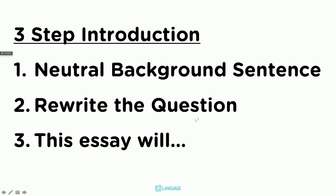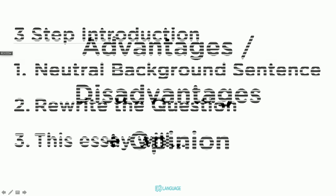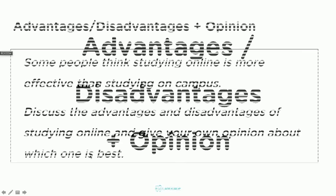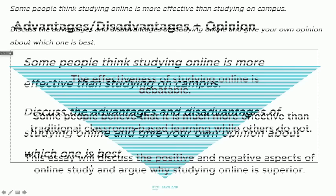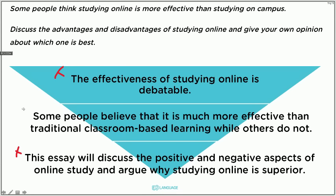Three-step introduction — neutral background sentence, rewrite the question, 'this essay will.' Let's do advantages and disadvantages plus opinion — this is the final one. 'Some people think studying online is more effective than studying on campus. Discuss the advantages and disadvantages of studying online and give your opinion about which one is best.' It's not just both sides — it's also your opinion. The first two sentences are the same. Third sentence: 'This essay will discuss the positive and negative aspects of online study and argue why studying online is superior.'